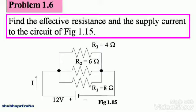Find the effective resistance and the supply current to the circuit of figure 1.15. Note down figure 1.15, you have three resistances, R1, R2, R3, respectively having values of 8 ohm, 6 ohm and 4 ohm.